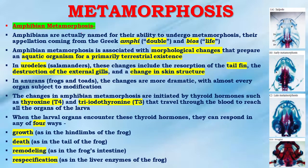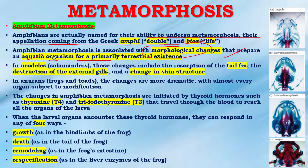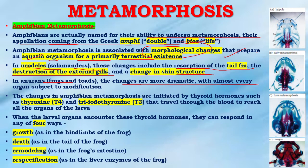In amphibian metamorphosis — amphibians are named for their ability to undergo metamorphosis, their name coming from the Greek 'amphi' meaning double and 'bios' meaning life. Amphibian metamorphosis is associated with morphological changes that prepare an aquatic organism for a primarily terrestrial existence. In urodeles, that is salamanders, these changes include resorption of the tail fin, destruction of the external gills, and a change in skin structure. In anurans, that is frogs and toads, the changes are more dramatic, with almost every organ subject to modification.